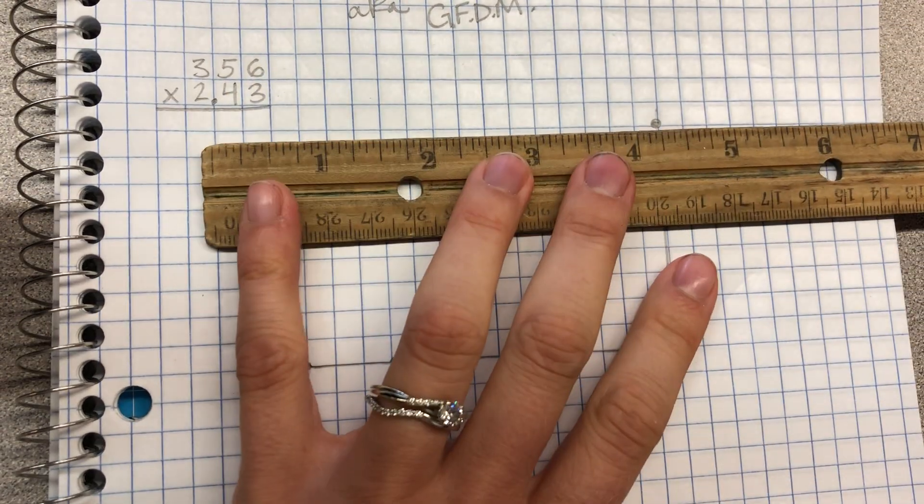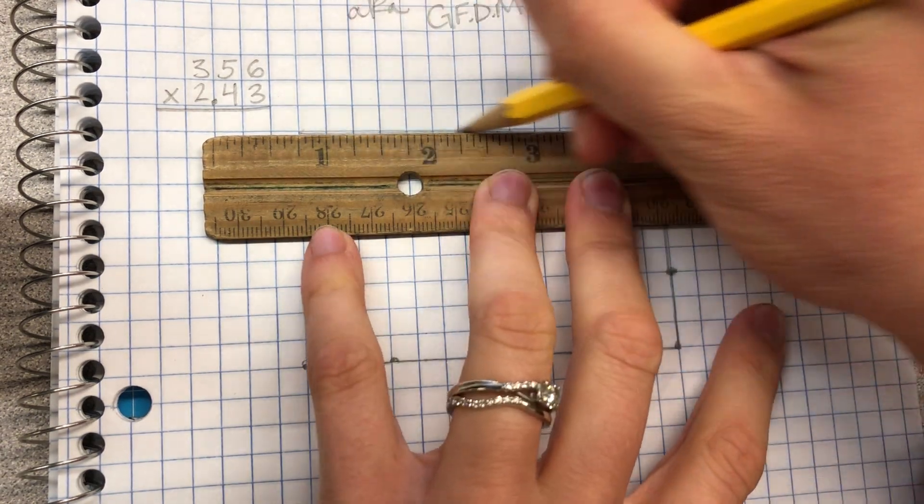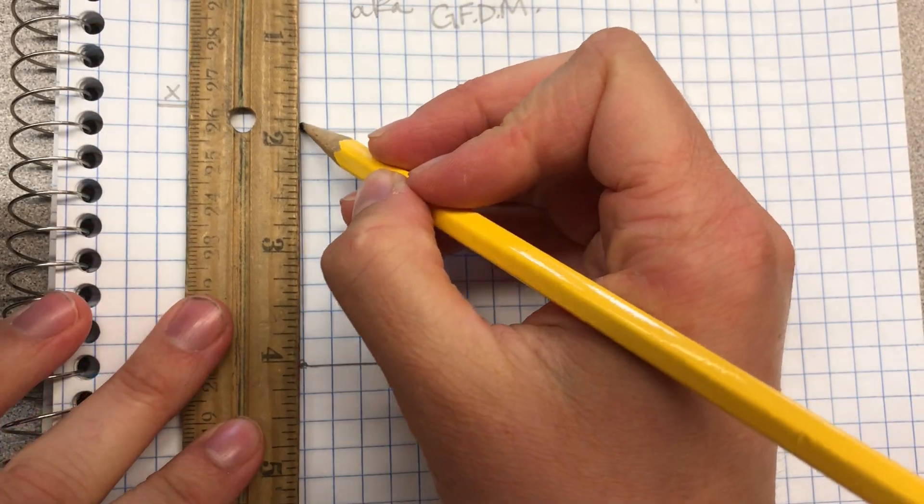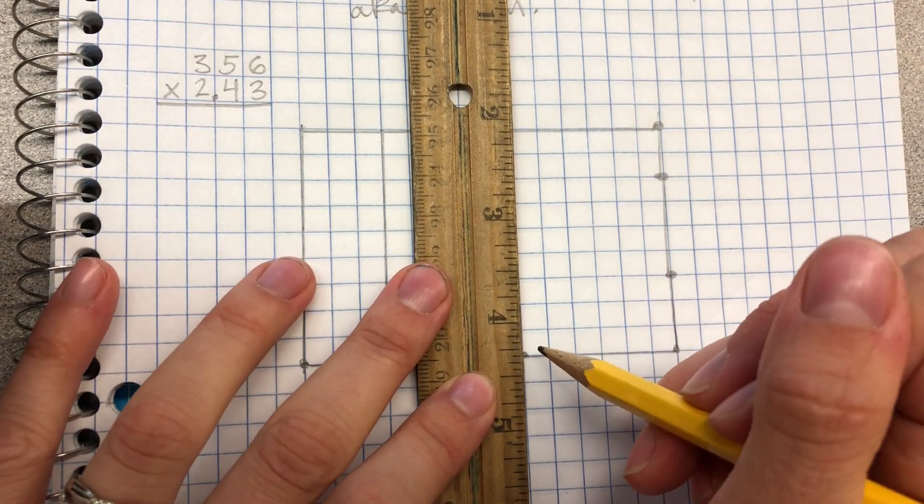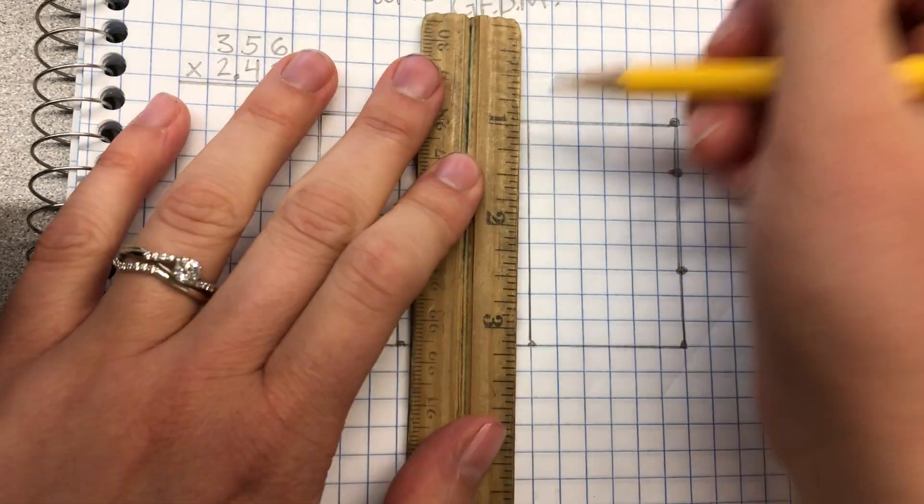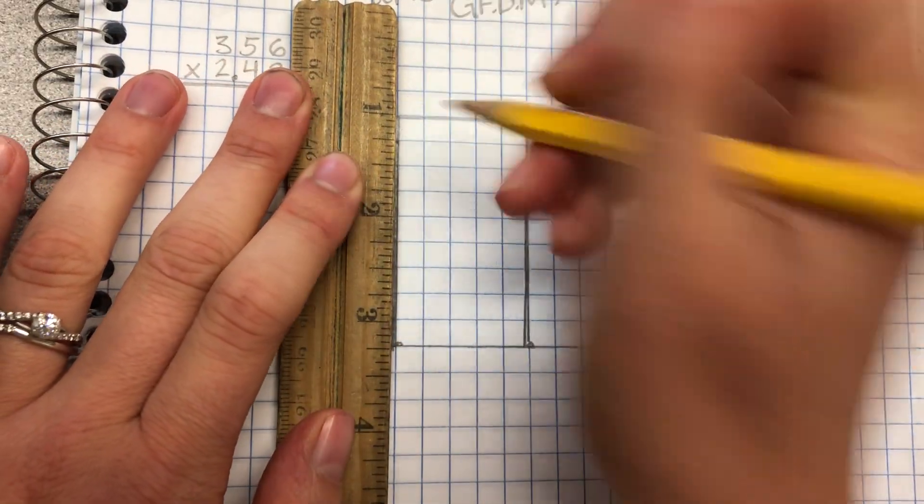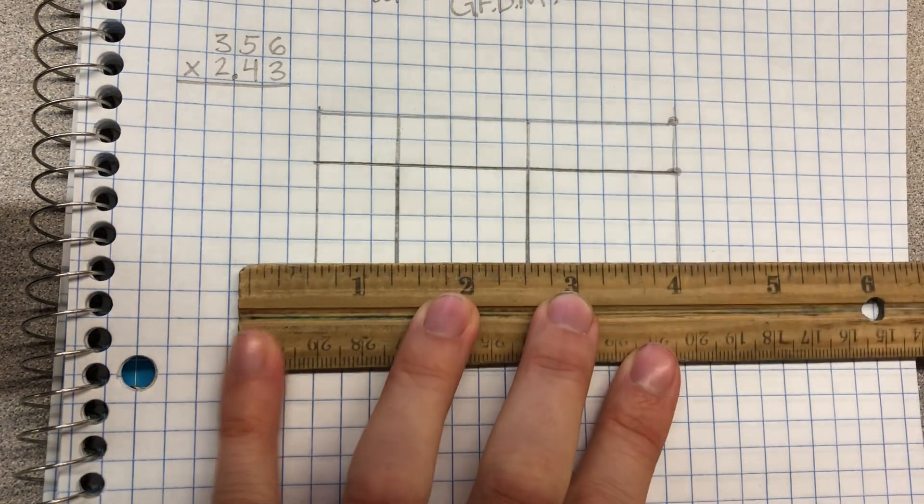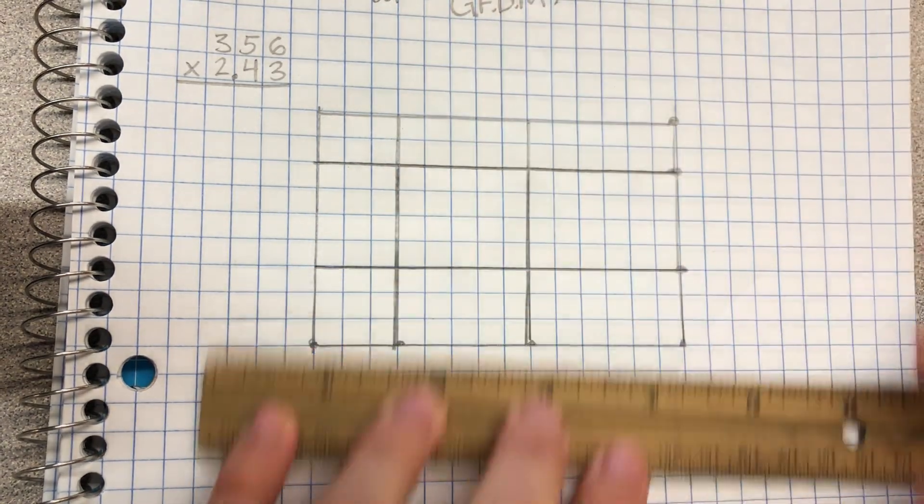Now we'll use our straight edge to turn our right angle into a rectangle. And then draw lines to where each dot that we drew is. I want to make that a little thicker so it's easier to see in this camera. And we have here and here.